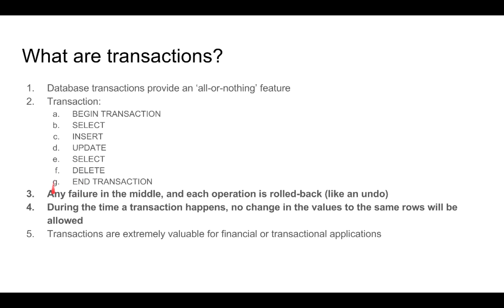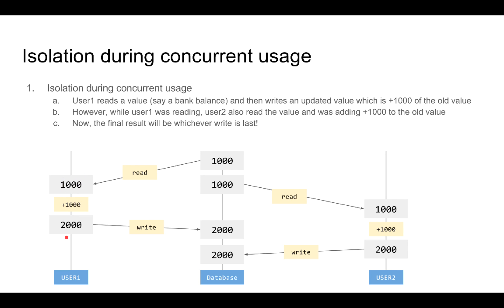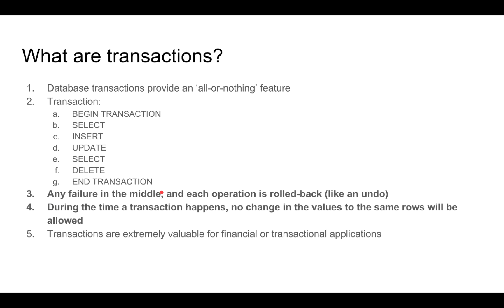This is how we handle failures with transactions. Suppose multiple transactions are happening — user one has a transaction and user two has a transaction. If user one's transaction and user two's transaction cause a conflict by updating or referring to the same value, one of the transactions will be deliberately failed and rolled back, so that we have an isolation effect between these two transactions.